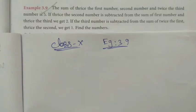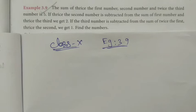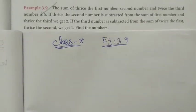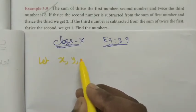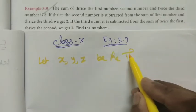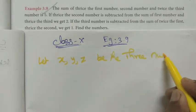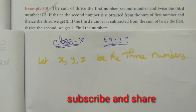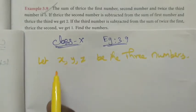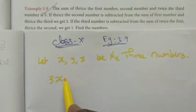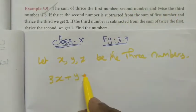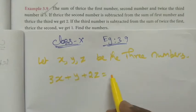Hi students, class 10 example sum 3.9. The sum of thrice the first number, second number and twice the third number is 5. Let x, y, z be the three numbers. So the first equation is: 3x plus y plus 2z is equal to 5.